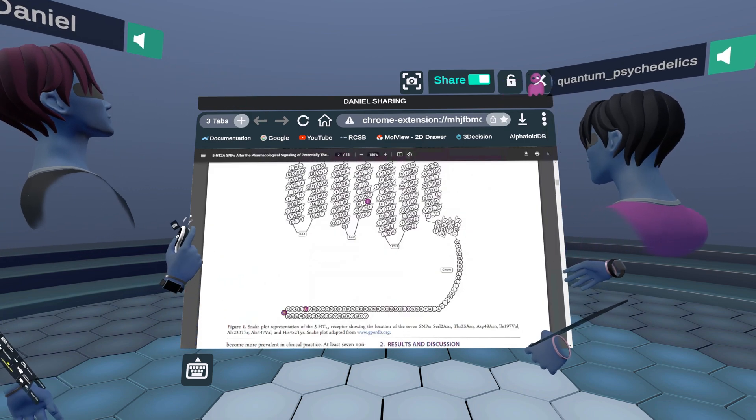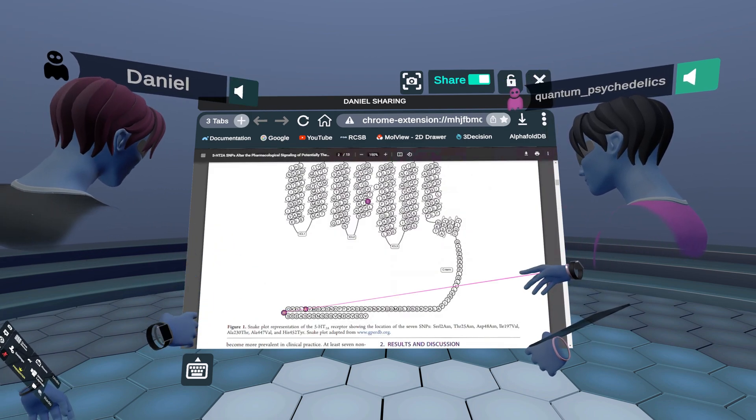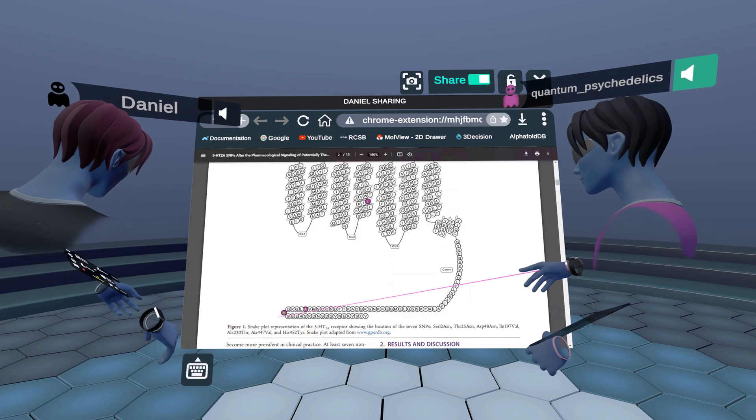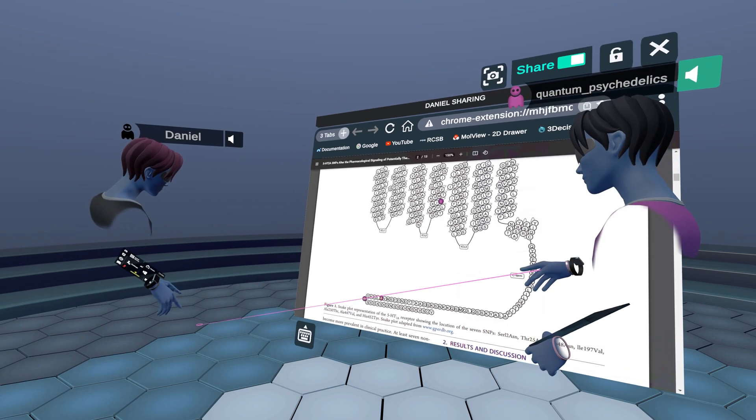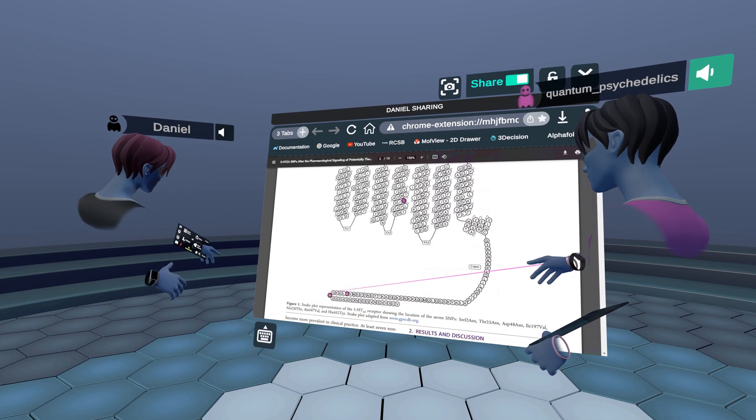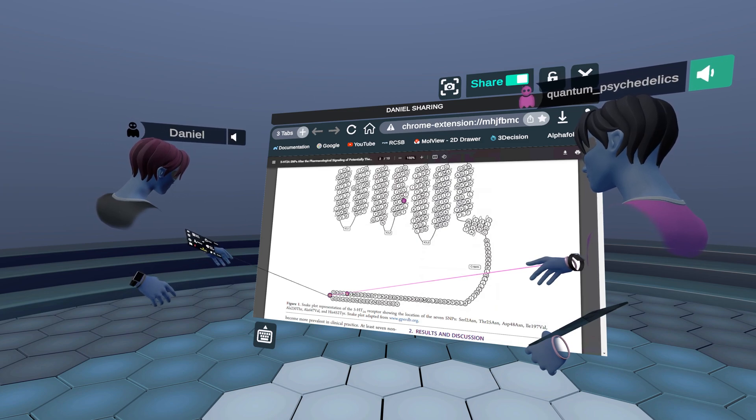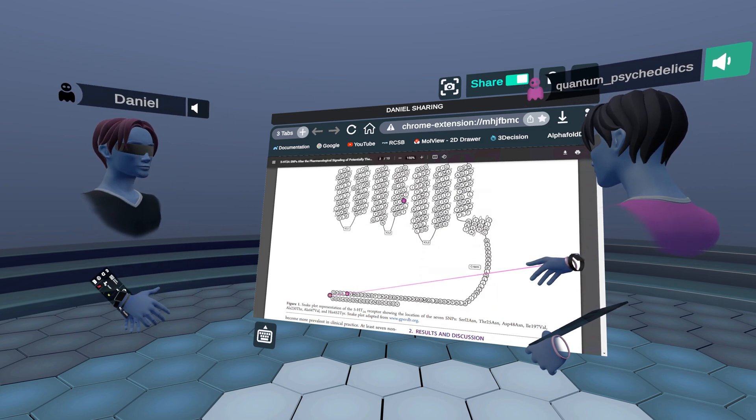Yeah, I mean, overall, what I want to talk about is the fact that there's a histidine residue down here, 452, that when it gets mutated, it actually has a pretty drastic effect on cellular signaling outcomes of a lot of the psychedelics.